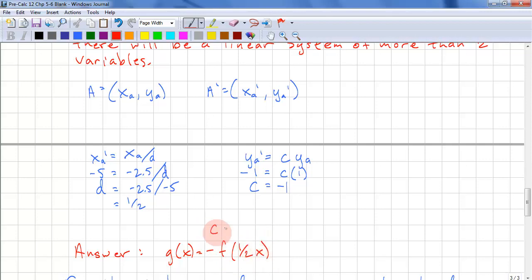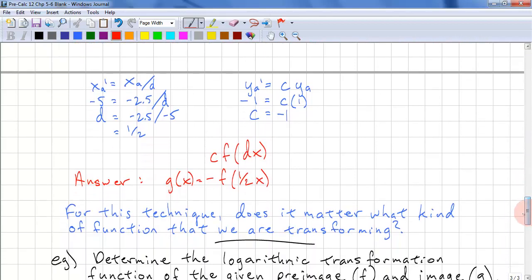Our answer is g(x) equals negative f(1/2 x). Remember, this is c times f(dx). So when we use this technique, does it matter what kind of function that we are transforming? Does it matter whether it's exponential, logarithmic, polynomial, rational? And the answer is no. We can still use the same formulas.